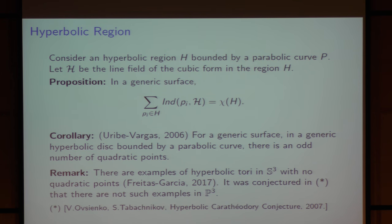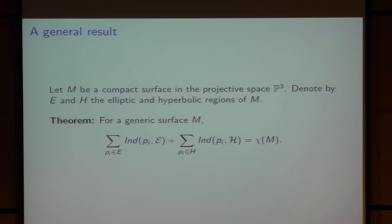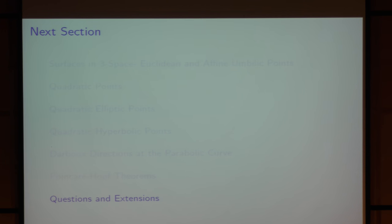A remark: just to recall what Ronaldo has done — there are examples of hyperbolic tori in affine space with no quadratic points. But the question of hyperbolic tori in P3 is a problem he is working on. Taking all these results together, for a generic surface the sum of the indices of the quadratic points in both the elliptic and hyperbolic regions equals the Euler characteristic of the surface.